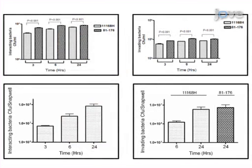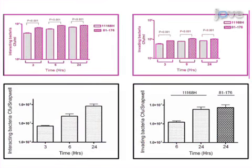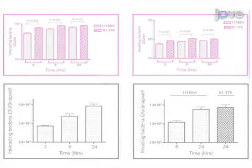Ultimately, an increase in the number of interacting and intracellular bacteria can be observed using the VDC model compared to standard aerobic culture conditions. The main advantage of this technique over existing methods, such as the standard tissue culture adhesion and invasion assays, is that the co-culture of bacteria and intestinal epithelial cells is performed under in vitro conditions that more closely mimic the in vivo conditions of the human intestine.